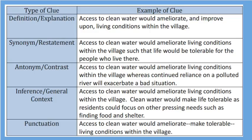The fourth type of clue we may encounter is an inference or general contextual clue. For example: 'Access to clean water would ameliorate living conditions within the village. Clean water would make life tolerable as residents could focus on other pressing needs such as finding food and shelter.' This infers what ameliorate means and gives you general contextual clues through the explanation in the second sentence.